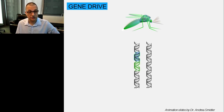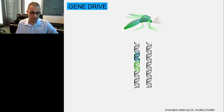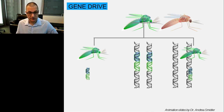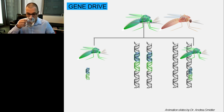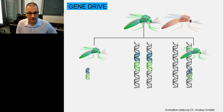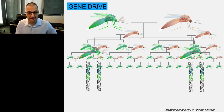Now let's see how a gene drive works. Here you see two chromosomes: one naive chromosome that does not carry the gene drive, and the other — the carrier — which carries the gene drive. The gene drive makes a cut and then copies itself onto the naive chromosome. This mosquito then mates with a wild-type counterpart, the process is repeated across multiple generations, and the gene drive spreads through the population.